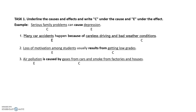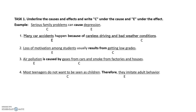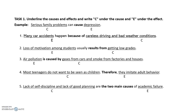In number three, 'cause' is used again but this time in the passive form, so the cause is given after 'caused by' and the effect — air pollution — is given before it. In number four, 'therefore' is used, so the effect comes after 'therefore': they imitate adult behavior is the effect, and its cause is that most teenagers don't want to be seen as children. For the last one, the cause is given in noun form, and the effect is academic failure.